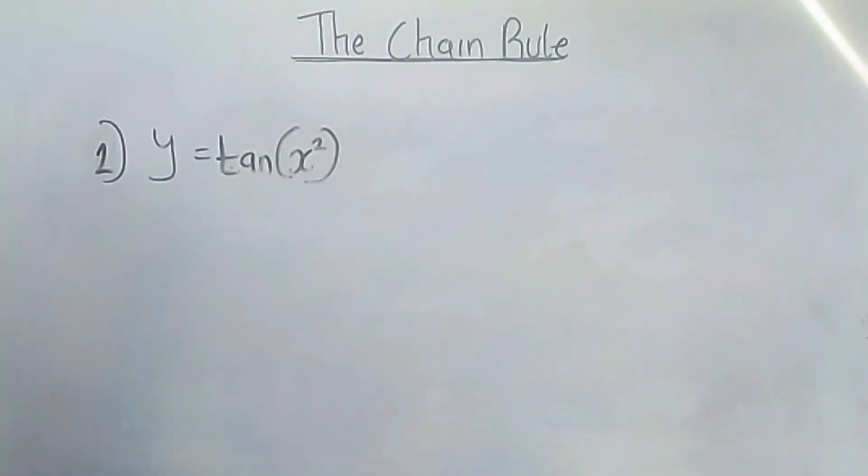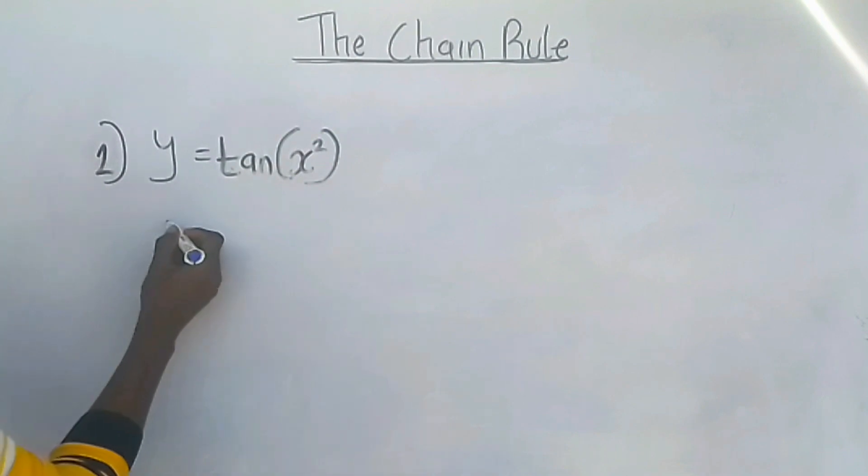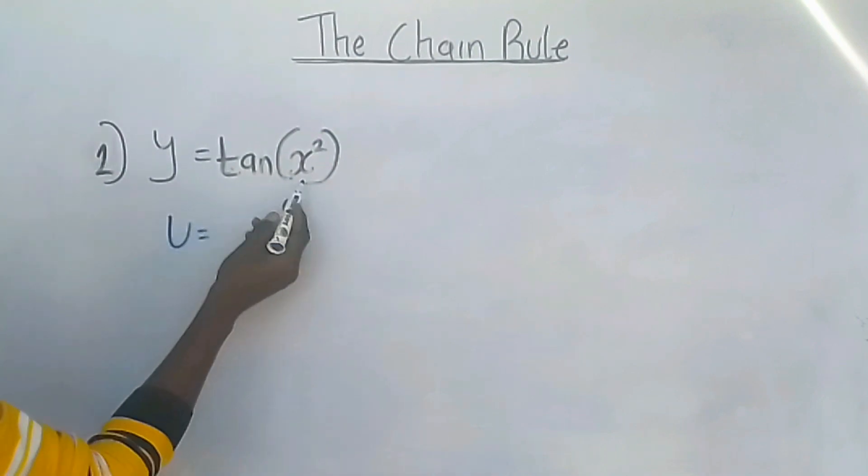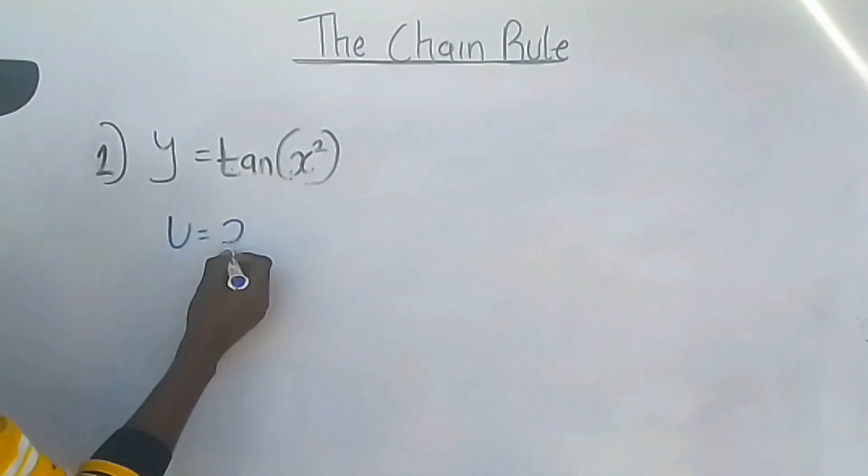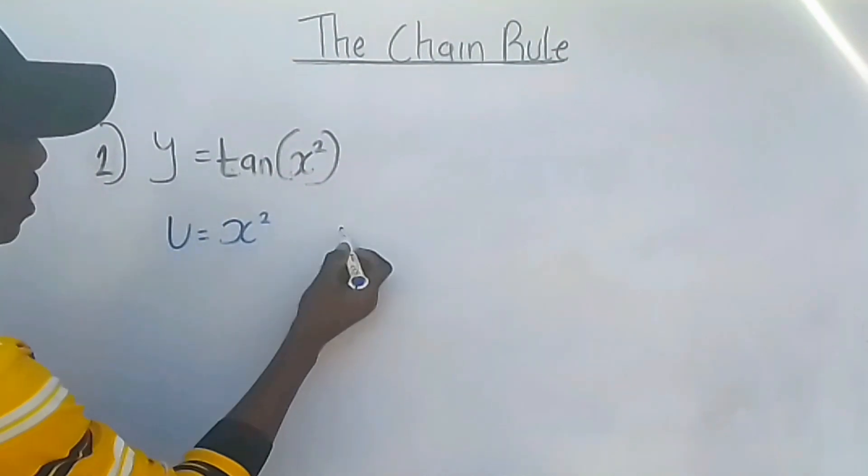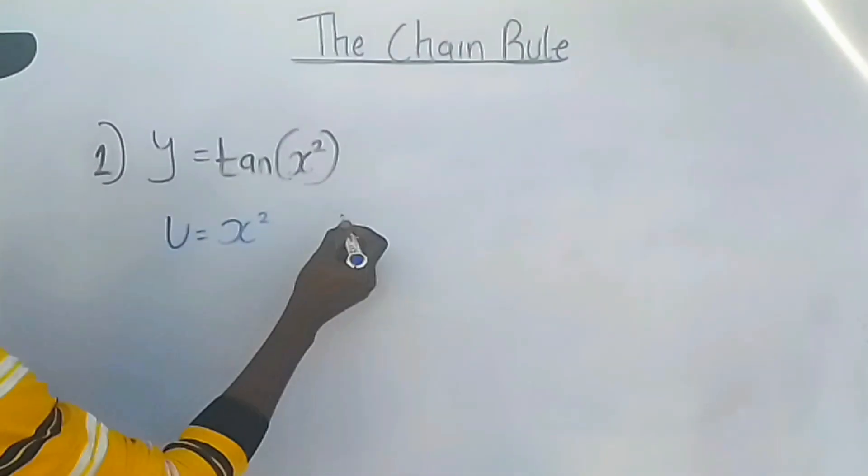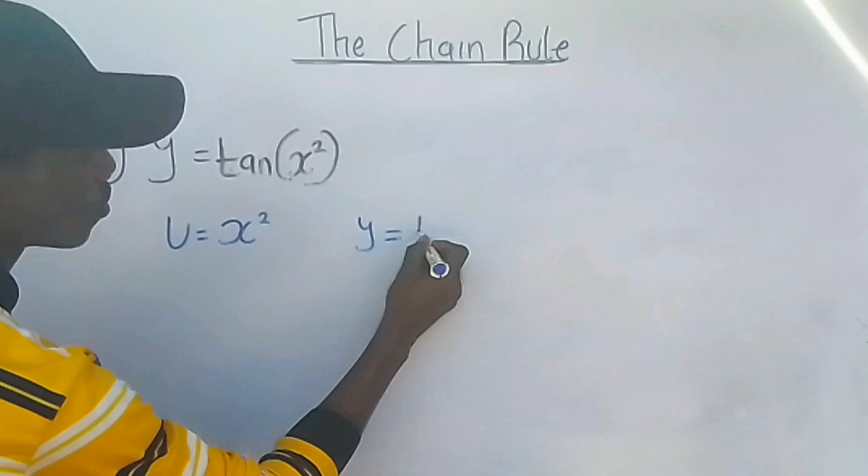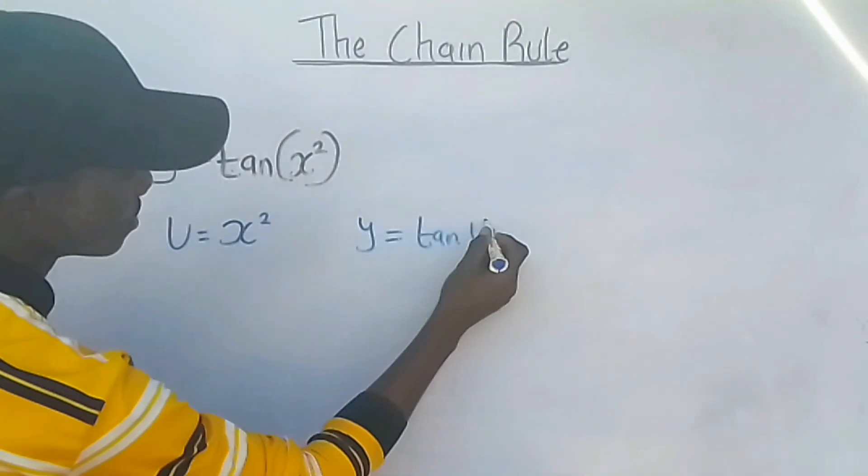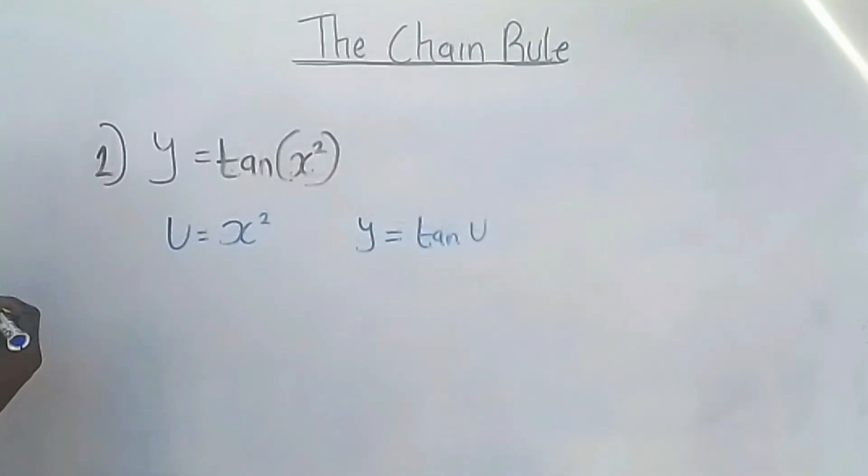The first step is to identify the inner function and the outer function. In this case, I'm going to set u equals to the inner function, which is x squared. So u equals x squared. If u equals x squared, then y will equal tan u.